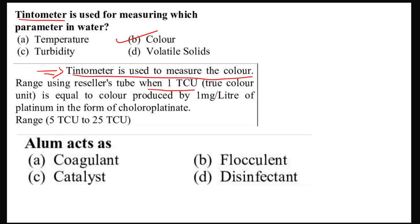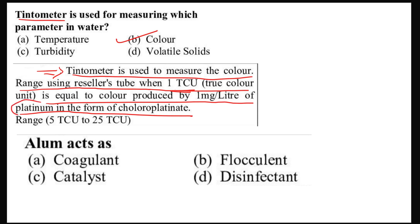A tintometer is used to measure the color range using a Nessler's tube. One TCU — true color unit — is equal to the color produced by one milligram per liter of platinum in the form of chloroplatinate. This is a very important objective question and definition.